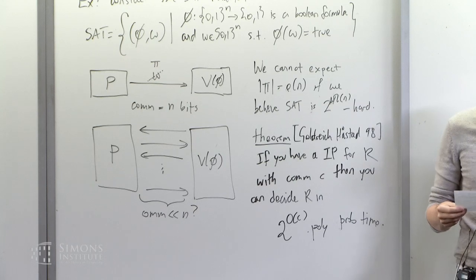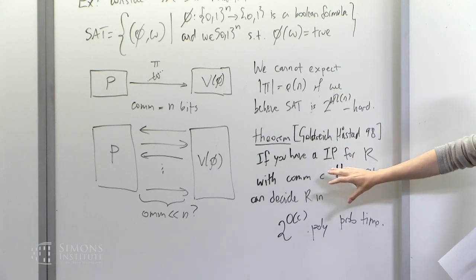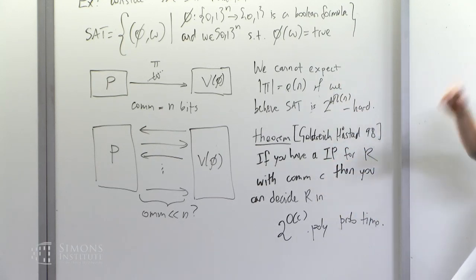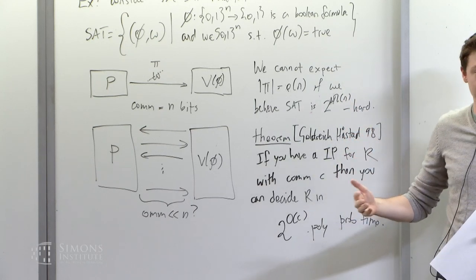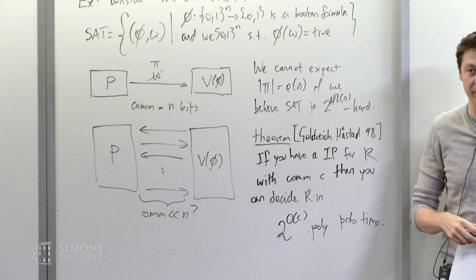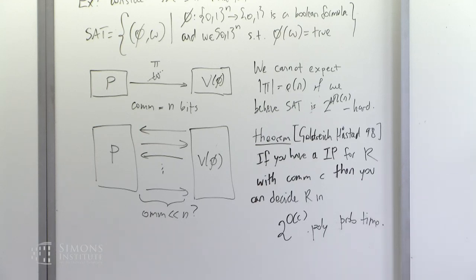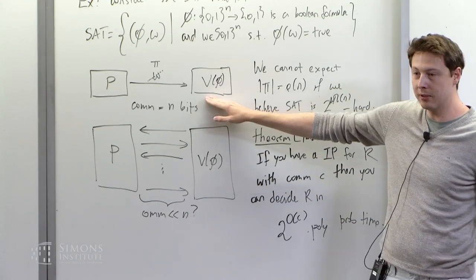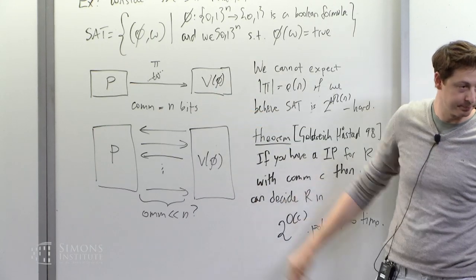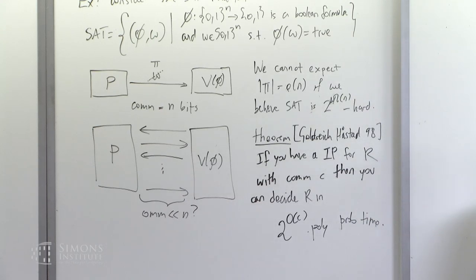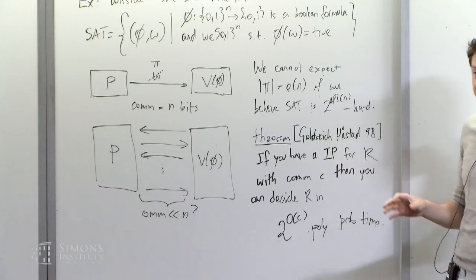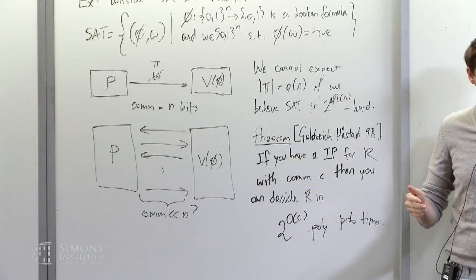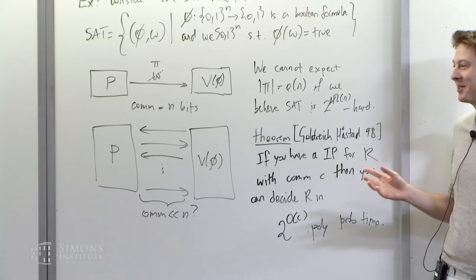Both of those strategies really apply only to proofs. If you try to run the same strategy in the argument case, it just doesn't go through. This leaves open the door that maybe arguments can do something great — for example, convincing a verifier that a formula is satisfiable by communicating only a logarithmic number of bits. A question came up: the communication bound in the Goldreich-Hastad theorem is for both directions. If you bound only one direction, there's a follow-up paper showing you can simulate in co-nondeterministic time 2^(O(c)), leading to the same conclusion that non-trivially laconic proofs are unlikely.